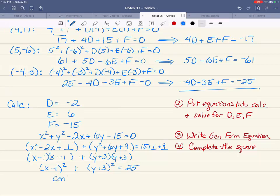So now we know that our center is the point positive one, negative three, and the radius is the square root of twenty-five, which is five. So we have completed what we needed to do for this problem. These are the steps you must go through in order to find the equation of a circle given three points.